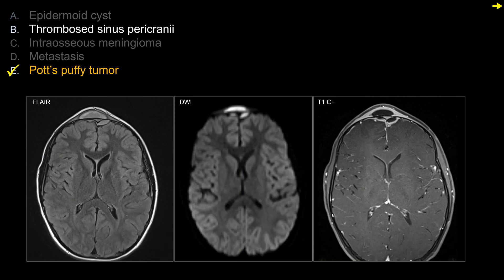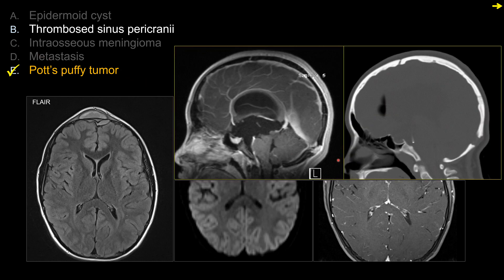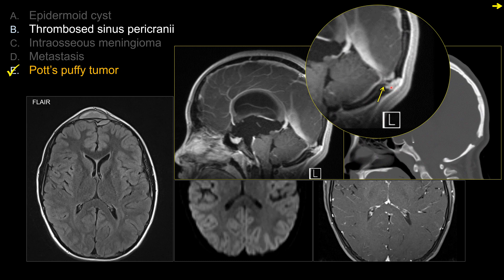For choice B, thrombosed sinus pericraniae: sinus pericraniae is a venous anomaly with abnormal communication between the intracranial venous sinuses and an extracranial venous structure, connected by an intraosseous vein. It is a type of slow-flow vascular malformation. In a thrombosed sinus pericraniae, you can see a filling defect within it. However, you should not see surrounding inflammation like in this case, which makes choice B not a good answer here.